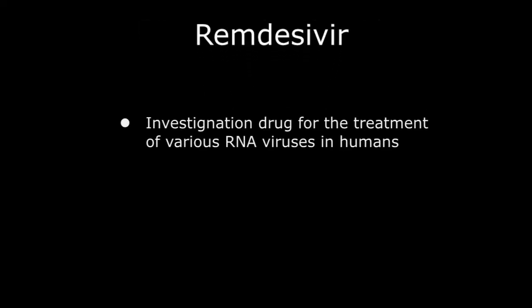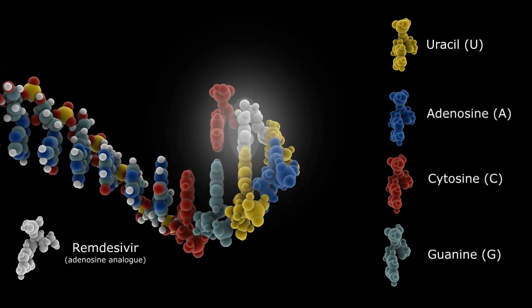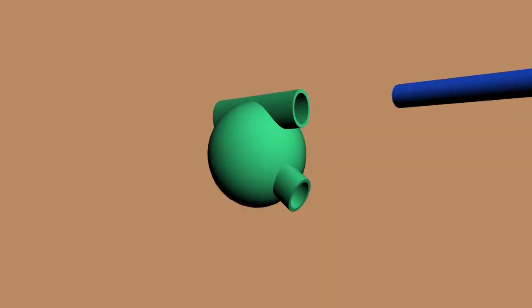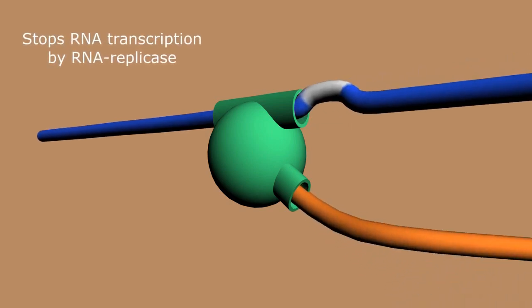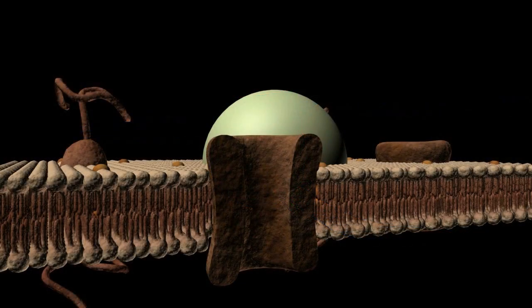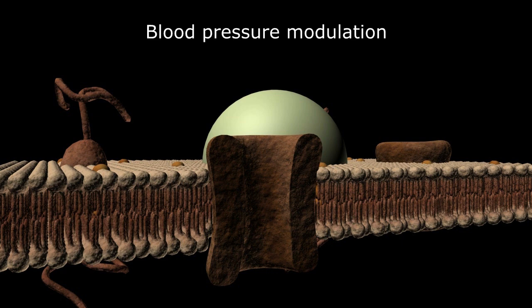Remdesivir is an investigational drug for the treatment of various RNA viruses in humans. Essentially an adenosine analog, once administered, remdesivir is inserted into the RNA chain, resulting in a conformational change that prevents the chain from entering the RNA-dependent RNA polymerase for reproduction. Medications that bind to and block the ACE2 metalloprotein would theoretically block the virus from attaching to the host cell membrane. However, since this enzyme is involved in blood pressure modulation, the clinical effects are uncertain and more research is necessary.